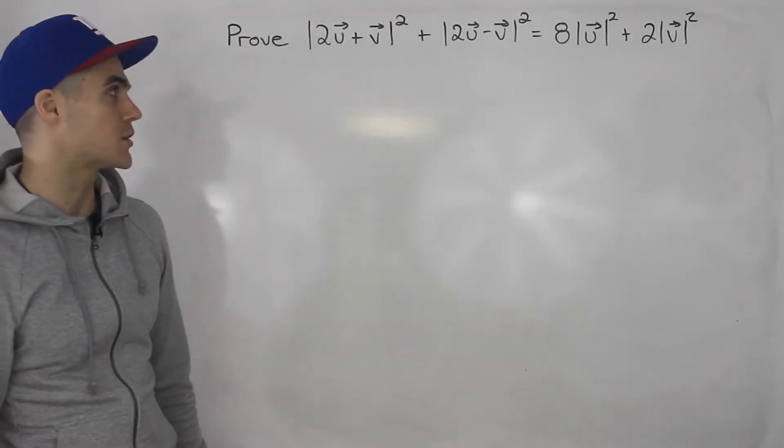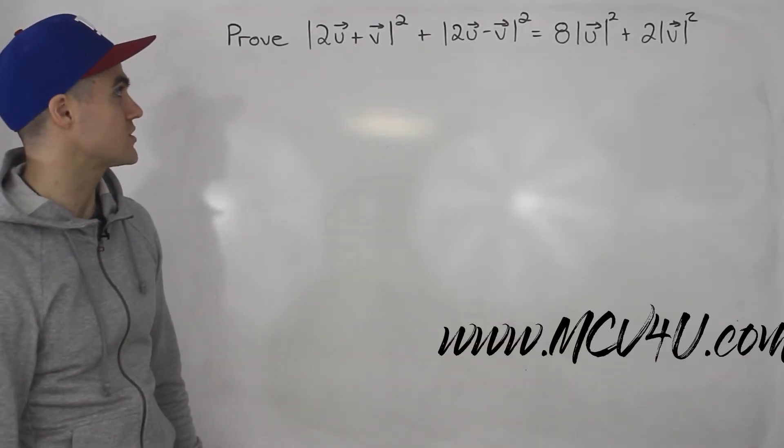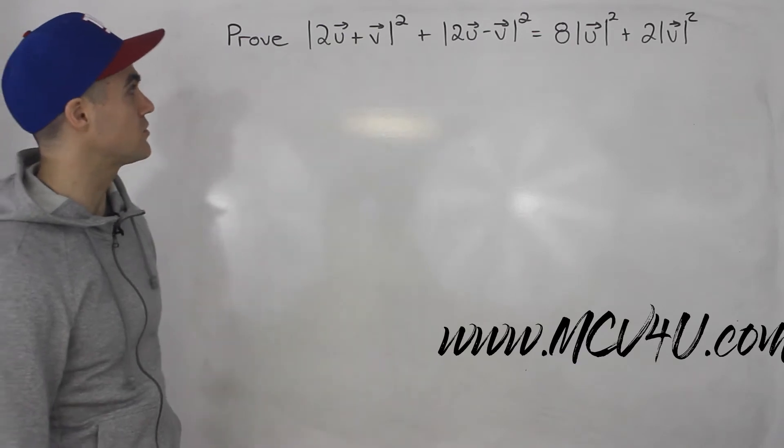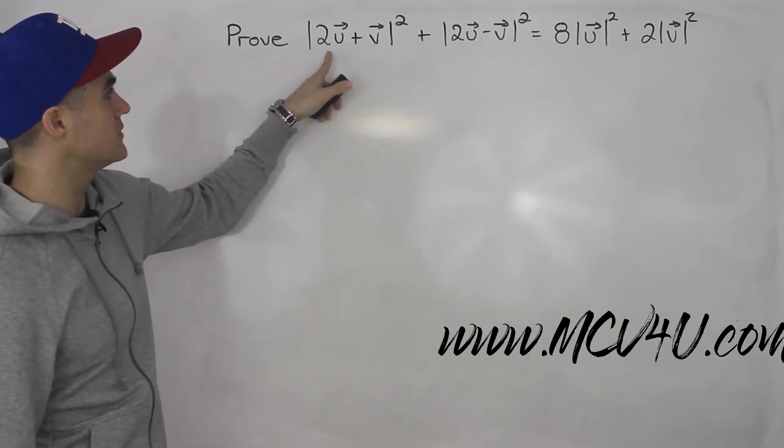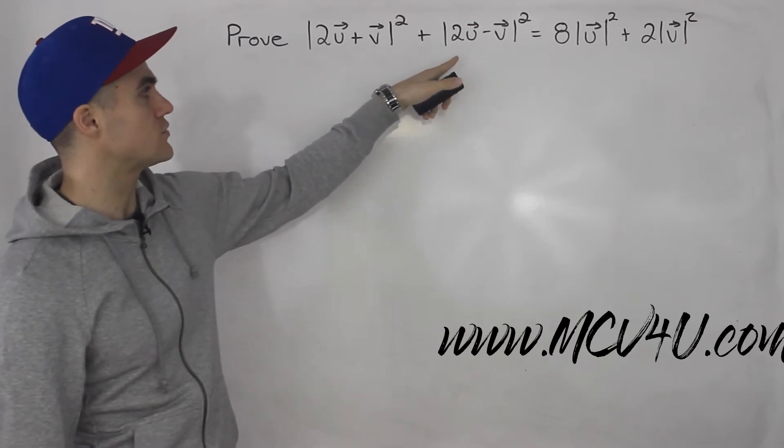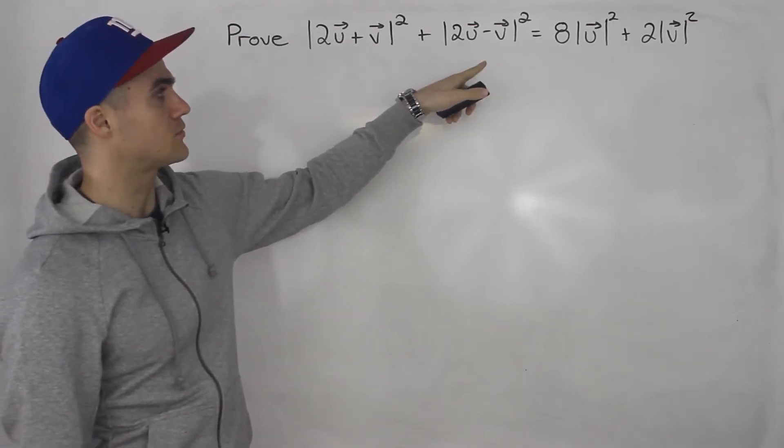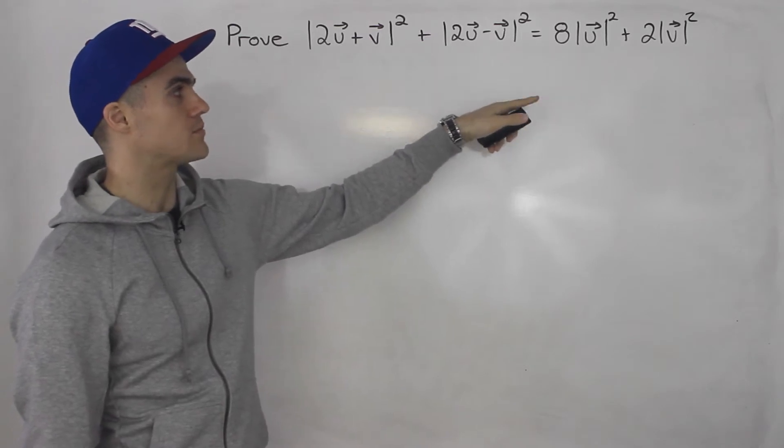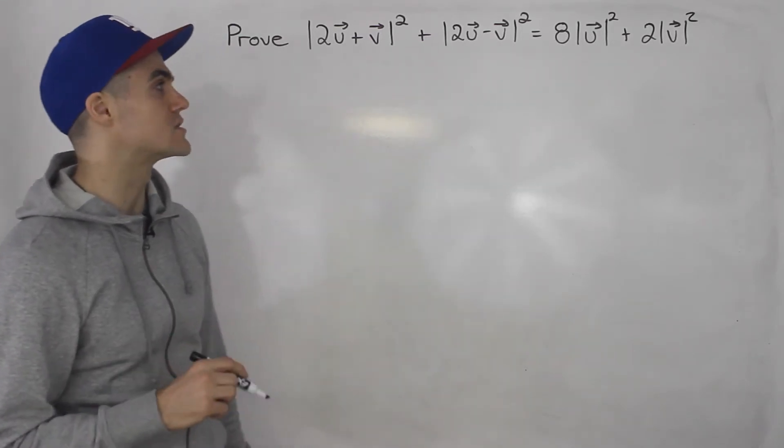What's up everybody, welcome back, Patrick here. Moving on to the next question, we have to prove that this equation holds here. So we got the magnitude of 2u plus v squared plus the magnitude of 2u minus v squared, and we have to show that it equals 8 times the magnitude of u squared plus 2 times the magnitude of v squared.